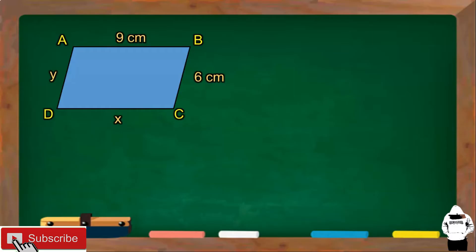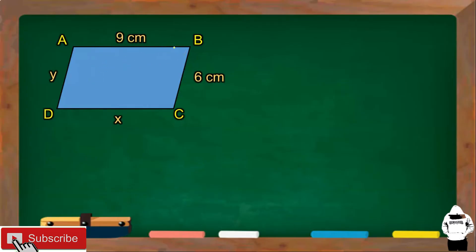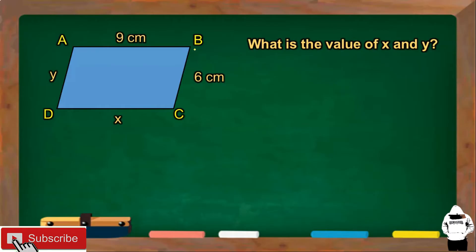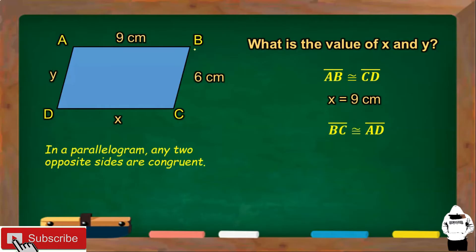Let's have the first example. Parallelogram ABCD. AB measures 9 cm, BC measures 6 cm. We are going to find the value of X and Y. Based from the figure, we apply the property wherein any two opposite sides are congruent. Segment AB is congruent to segment CD, so CD equals 9 cm. Segment BC is congruent to segment AD, so Y equals 6 cm.